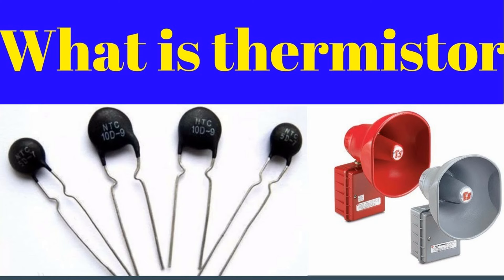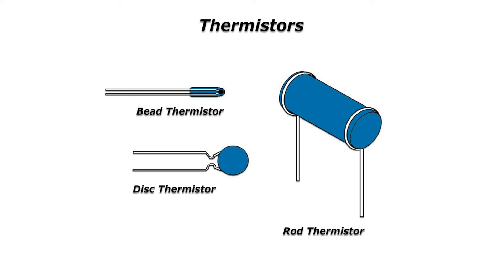For circuit protection, PTC thermistors are used to limit inrush current when powering on electronic devices: initially presenting high resistance to limit current, then as they warm up and resistance decreases, current increases to normal levels, protecting components from sudden surges. For temperature sensing and control, while less common for precise measurement compared to NTC thermistors, PTC thermistors can be used in systems where a significant change in resistance with temperature is beneficial — applications include temperature monitoring in devices where a simple trigger is sufficient and overtemperature protection to shut down or alert when a device reaches a certain threshold.